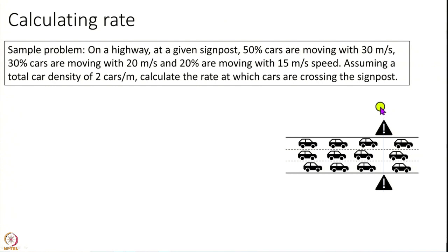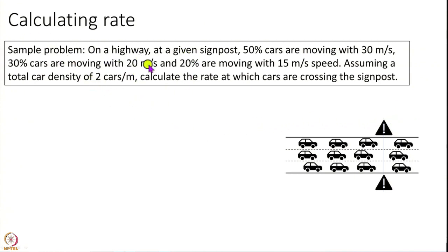Now imagine I have some signpost somewhere, just a spot on the road, and I ask you the question: what is the rate at which cars will be crossing this blue line here? We have to assume some density of cars — let us say the density is 2 cars per meter. That is actually a lot of cars, but let us assume it — it is just a number.